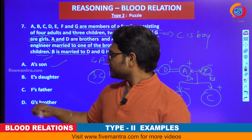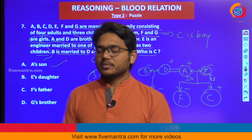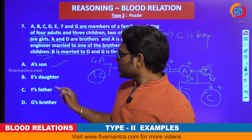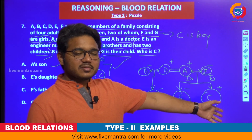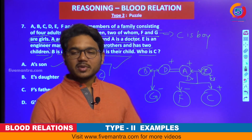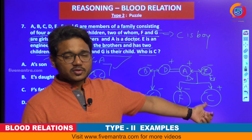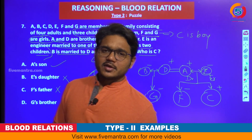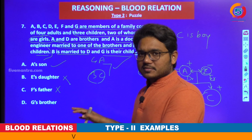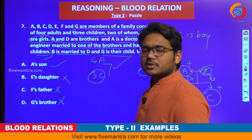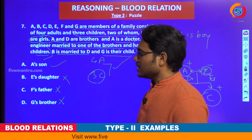Let us check the other options just for practice. E is daughter — is C E's daughter? Although E is mother of C, C is not a daughter because C is a male. Then F's father — no, C is a child and cannot be considered as father. Then G's brother — C is not G's brother; C is G's cousin. So the correct answer is that C is E's son.